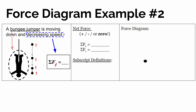And the sum of the forces will be pointing in the direction of the acceleration — that's in the opposite direction that the object is actually moving. The bungee jumper is moving down, so there must be more force pointed in the opposite direction, which is up. So the sum of the forces in the y direction must be positive.